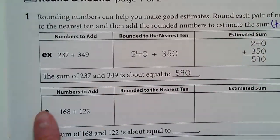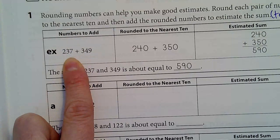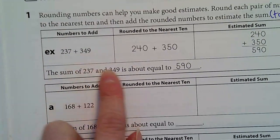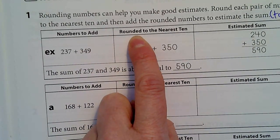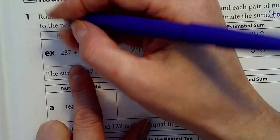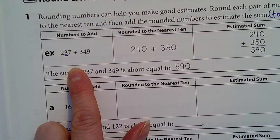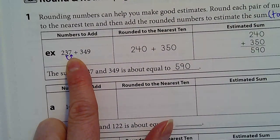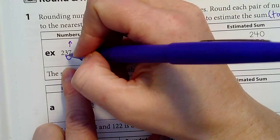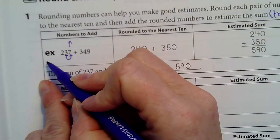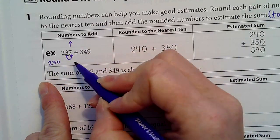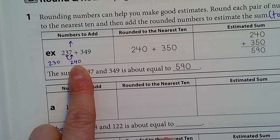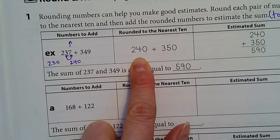Here it tells me the numbers I need to add, which are 237 plus 349. I have to round them first. It says in this box rounded to the nearest ten. I'm rounding to the tens right here, so I always look at the ones place, which is a seven. This means I'm going to round up. The number 237 is between 230 and 240, so if I round up, I'm going to round up to 240, which is what they put right here.